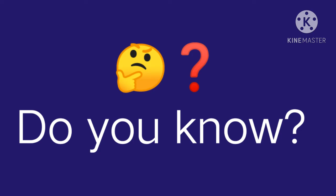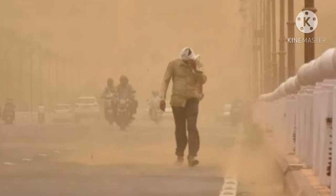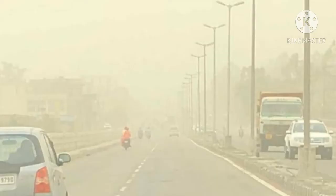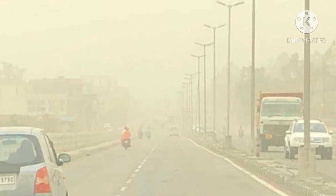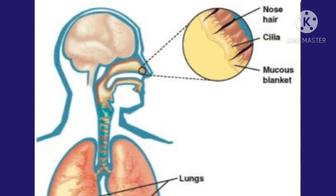Do you know? Dust and smoke particles may be present in the atmosphere, and there may even be disease-producing microorganisms — they are harmful for the body. The inner lining of the respiratory organs has fine hair-like structures called cilia. There is also a layer of a sticky substance called mucus. The dust and smoke particles stick to this mucus. Thus, the harmful substances in the air cannot reach the lungs.